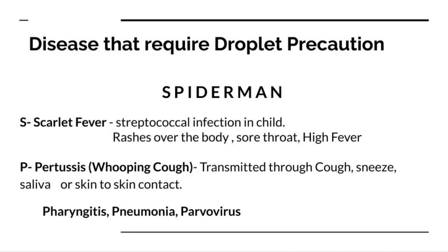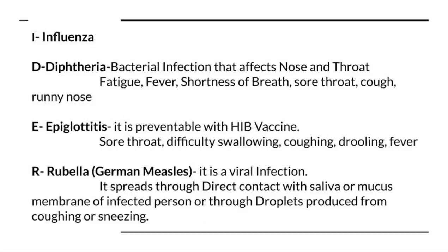S stands for scarlet fever, a streptococcal infection seen in children — the child will have rashes all over the body, fever, and a sore throat. P stands for pertussis, pharyngitis, pneumonia, and parvovirus. Basically, most upper respiratory tract infections except tuberculosis require droplet precaution. Pertussis, also known as whooping cough, is transmitted through cough, sneeze, saliva, or skin-to-skin contact.